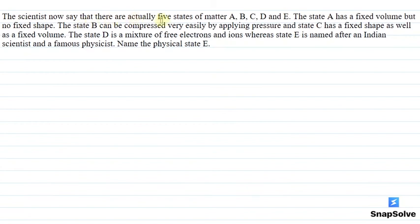The scientists now say that there are actually five states of matter A, B, C, D and E. The state A has a fixed volume but no fixed shape. The state B can be compressed very easily by applying pressure and state C has a fixed shape as well as a fixed volume. The state D is a mixture of free electrons and ions whereas state E is named after an Indian scientist and a famous physicist named the physical state E.